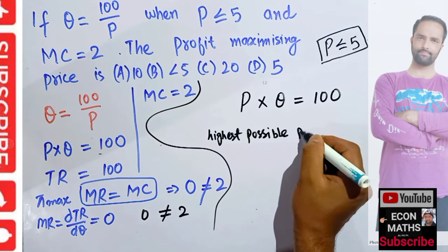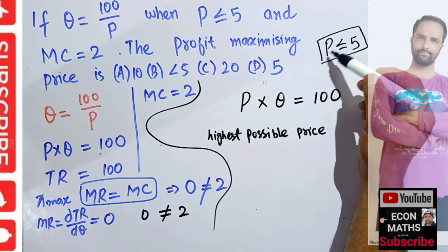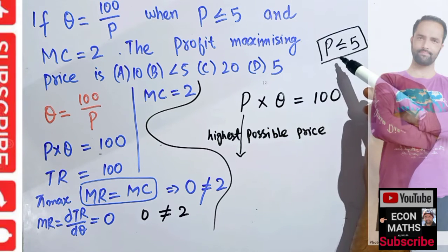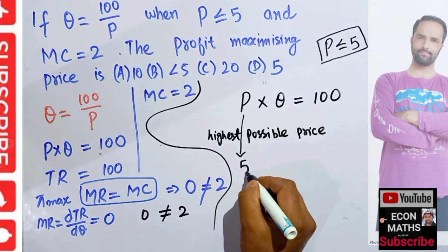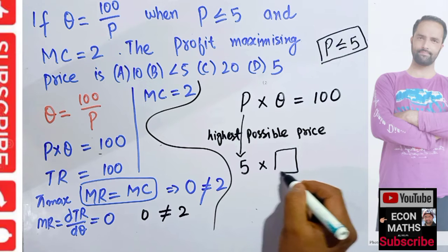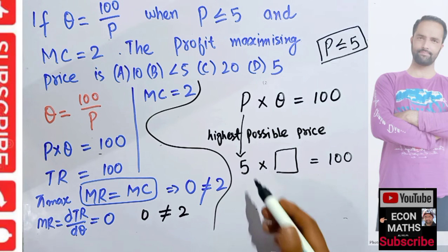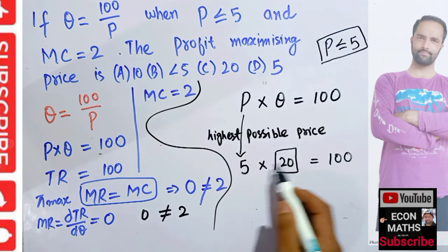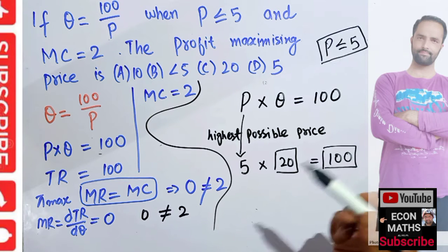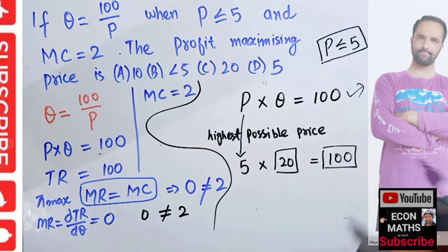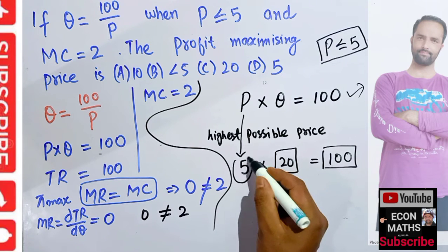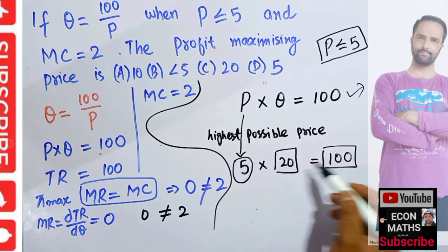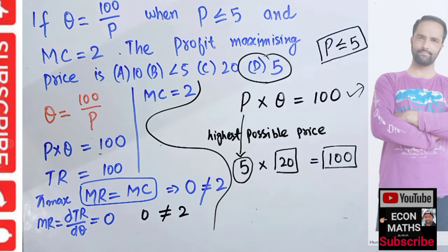The condition is that price is less than or equal to $5. If the firm charges the highest possible price, that price can only be $5. So $5 times output equals 100, which means Q equals 20. When we have constant total revenue, the firm charges the highest possible price and produces the lowest possible output. The correct option should be $5, meaning option D is correct.